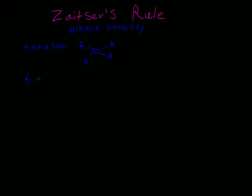We also have trisubstituted. Our alkene has an R, an R, and an R — so that's trisubstituted. The fourth position would be a hydrogen. So trisubstituted means we have three alkyl groups branching off of our alkene.